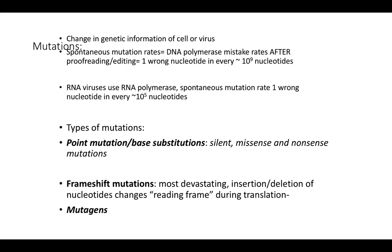Through natural selection, resistant bacteria are selected for, survive, and pass on their genes. Mutations aren't always bad — especially in asexually reproducing bacteria, mutations are really important for generating genetic diversity in a population. For natural selection to work, you need genetic variants in a population; without them, you won't get biological evolution and the population can't become better adapted to its environment.